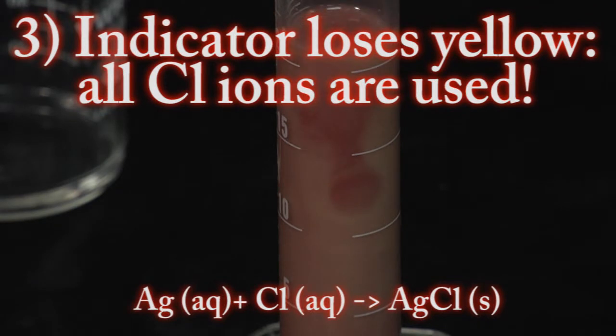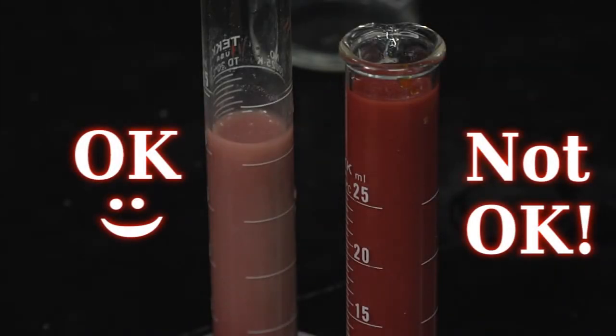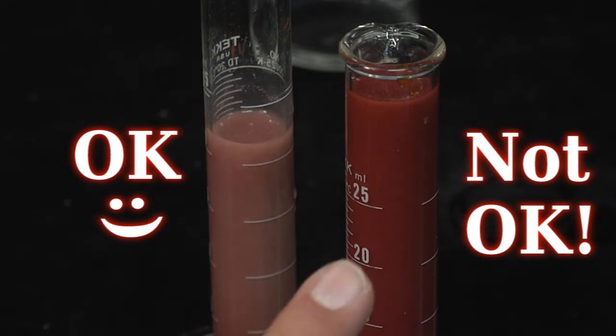Once this color stays, or is permanent, we can go ahead and stop our titration. Remember, we only want a permanent red-brown color. So as soon as we see that color stay, we know that our titration is finished.